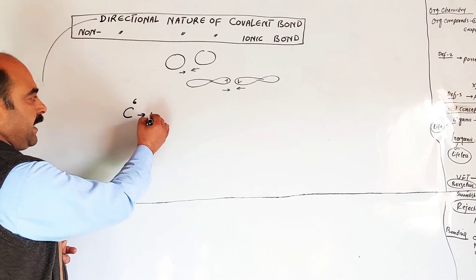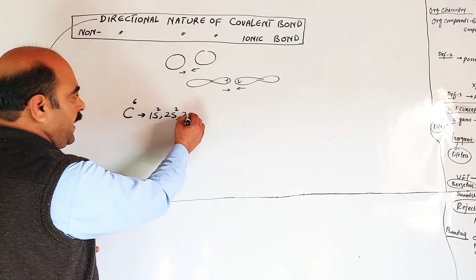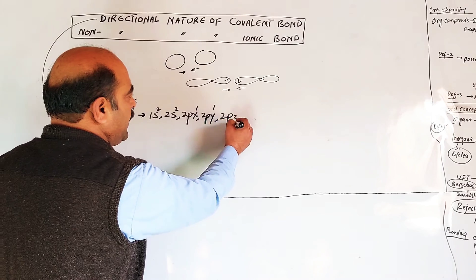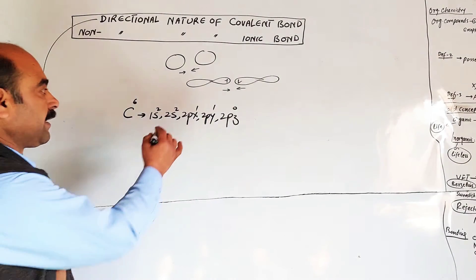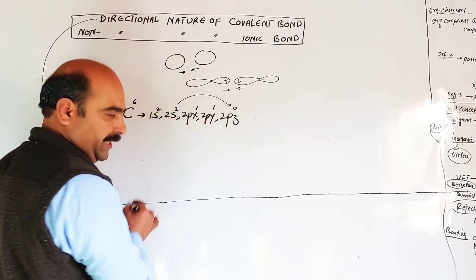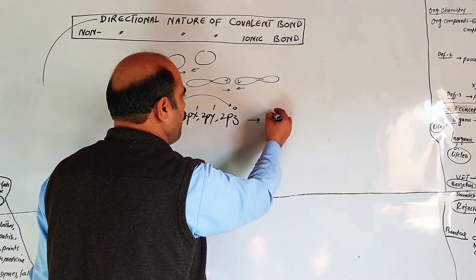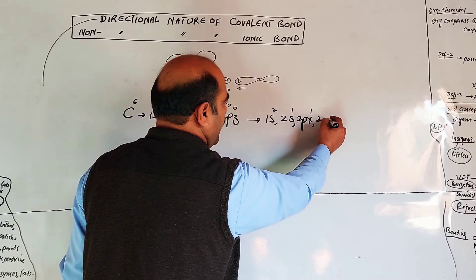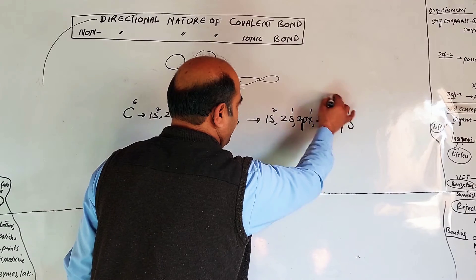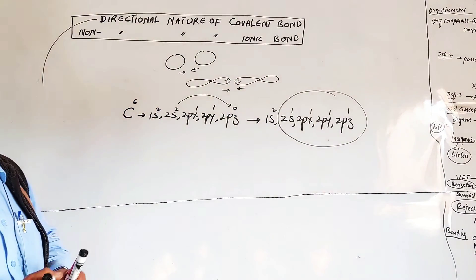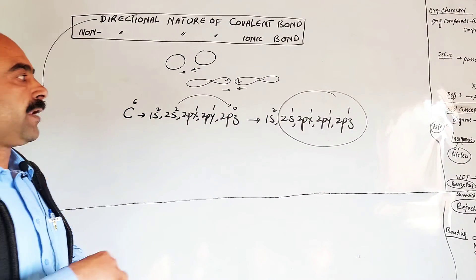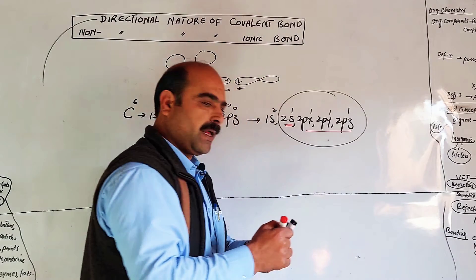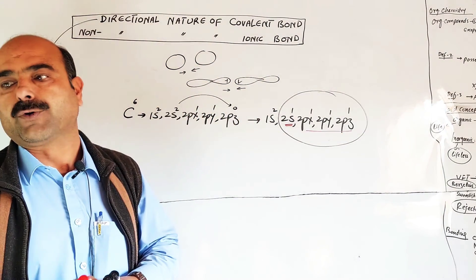For example, carbon has atomic number 6 with electronic configuration 1s2, 2s2, 2px1, 2py1, 2pz0. After promotion, one electron moves to 2pz: giving 1s2, 2s1, 2px1, 2py1, 2pz1. The atomic orbitals differ in size, shape, energy, length, and angle.